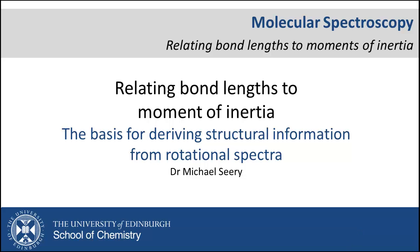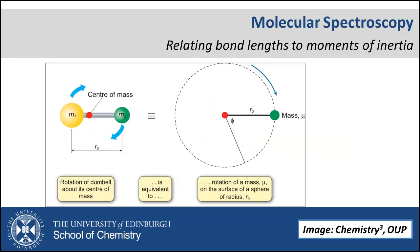In this video we will relate bond lengths to moments of inertia. When considering a bond with bond length r0 between two masses m1 and m2, we can say that this is equivalent to a mass known as the reduced mass rotating around a sphere of radius r0. This makes considering moments of inertia much easier. The corresponding moment of inertia is equal to the product of the reduced mass and the square of the bond length, with the reduced mass being defined as shown.